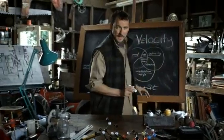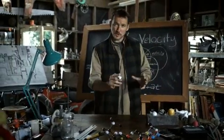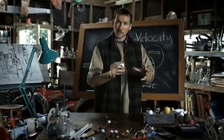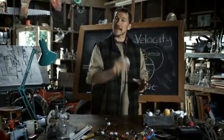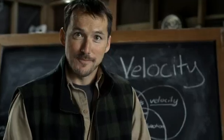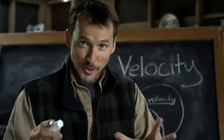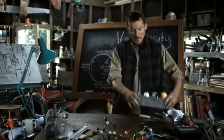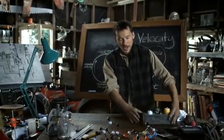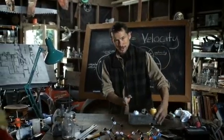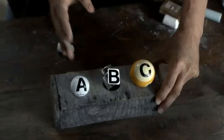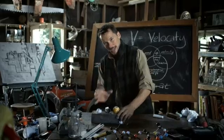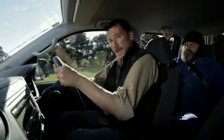If an object is traveling at a constant velocity, are all the points inside the object moving at the same velocity? Sort of. Consider this model: moving in a straight line at a constant speed, points A, B, and C have the same velocity.